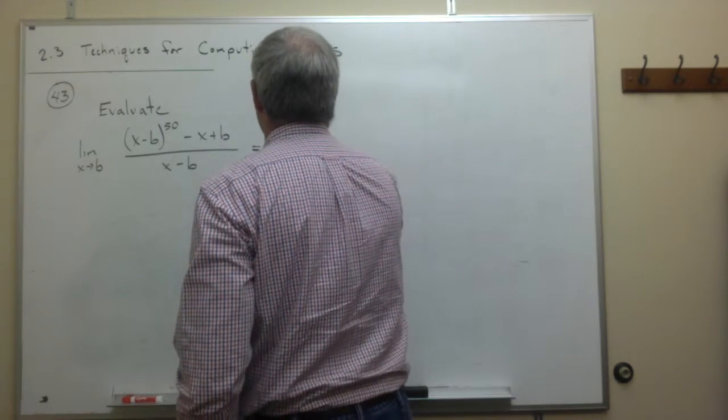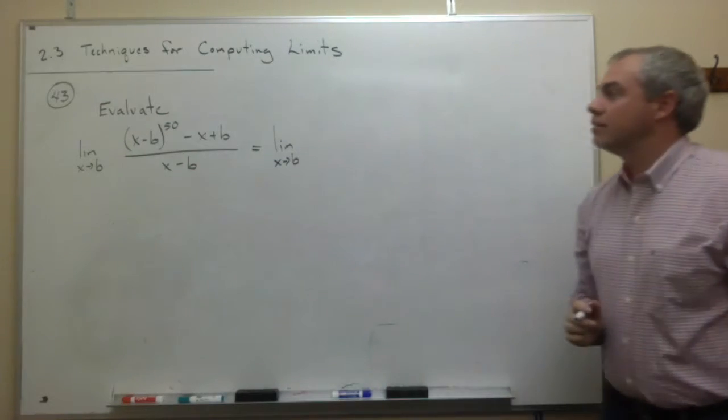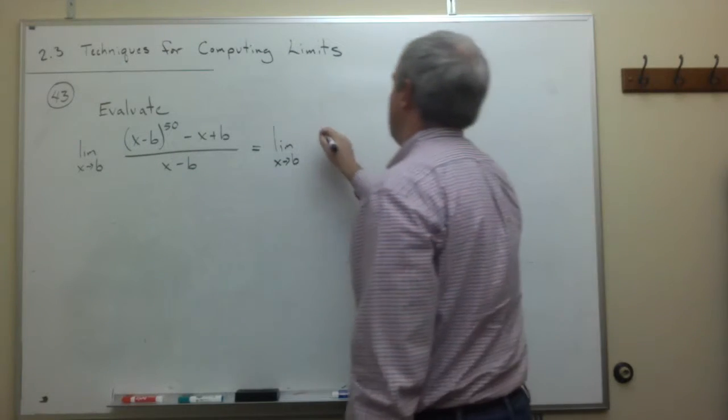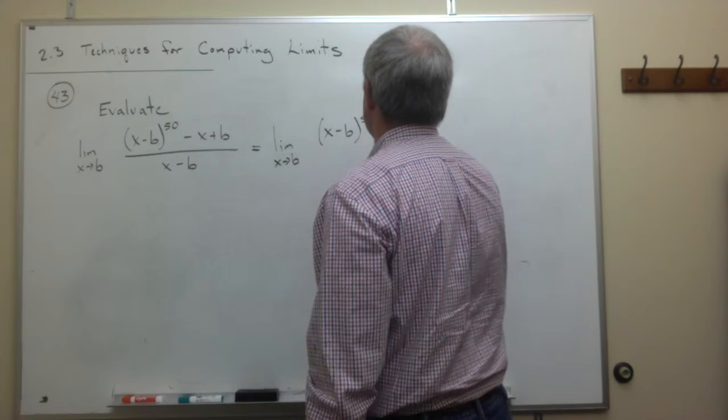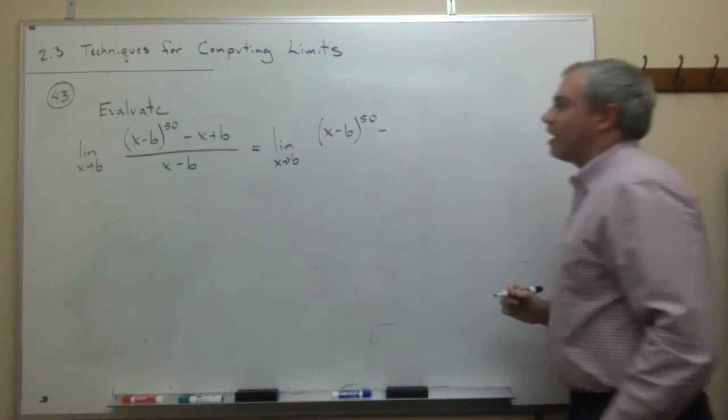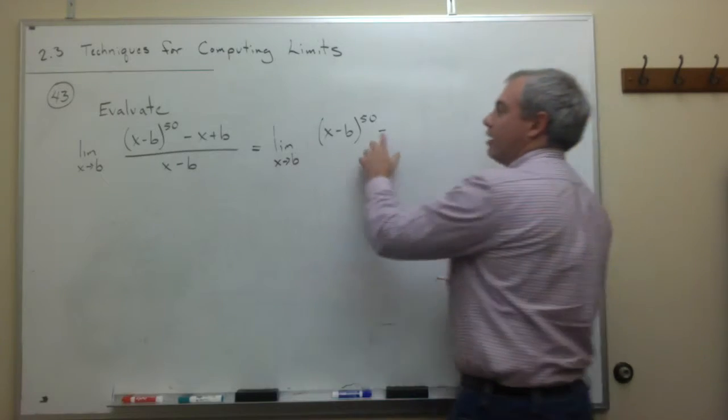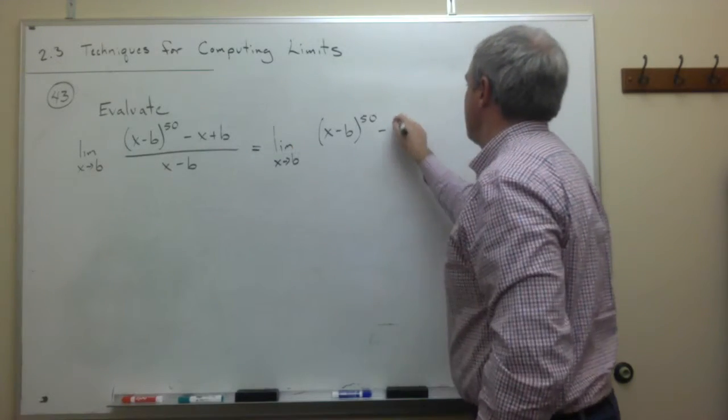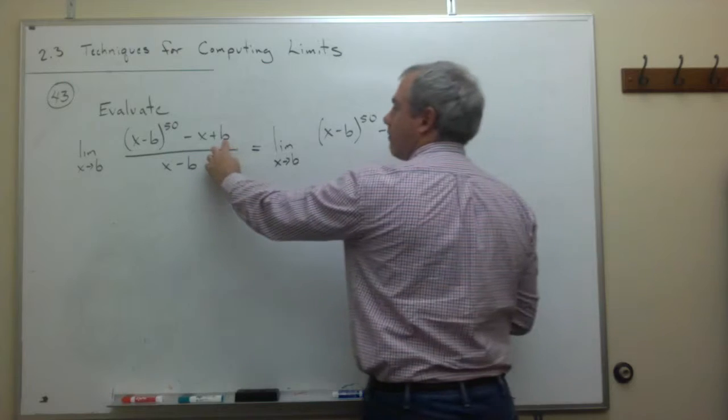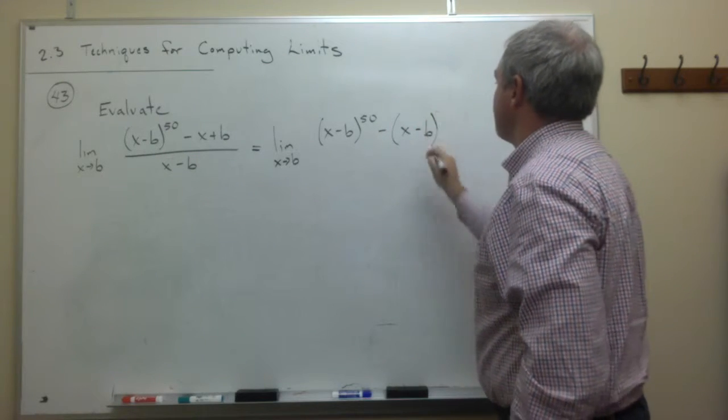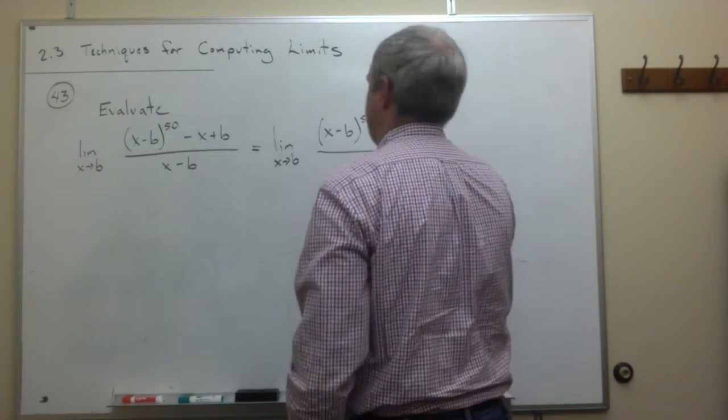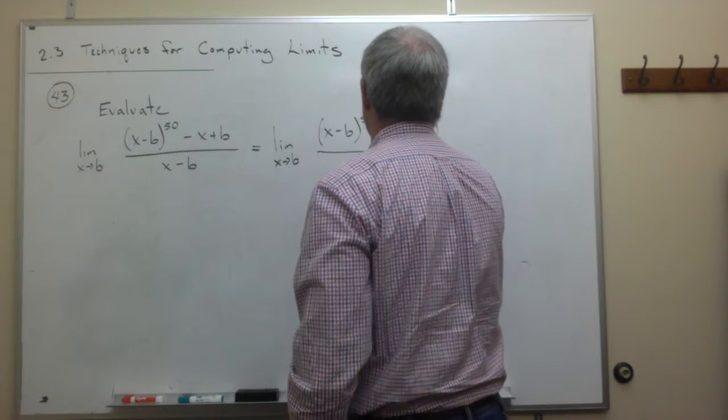We've got the limit as x goes to b of x minus b to the 50th. And I'm going to factor out a minus 1 here. When I factor out a minus 1 from the x, I'm just left with an x. And when I factor out a minus 1 from the b, I'm left with a minus b divided by x minus b.